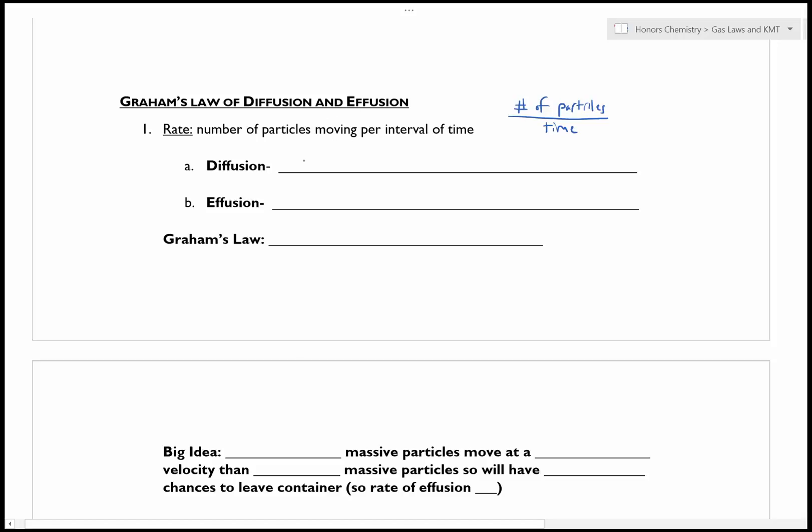So he looked at rates of diffusion and effusion, and I'm going to give you a definition for diffusion. So when I look at the term diffusion, what I mean is the spreading out of a gas. And this always occurs from an area of high concentration to an area of low concentration.